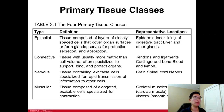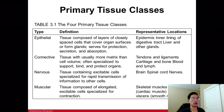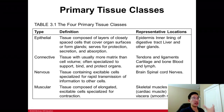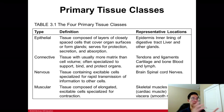Nervous tissue consists of nerve cells that are excitable. There are many subcategories — for example, inside your cerebellum you have Purkinje cells, which are very long and elongated, whereas you might have smaller neurons in parts of the cerebrum or hippocampus. All are able to excite and release a chemical called a neurotransmitter, which allows you to send a signal to another neuron.